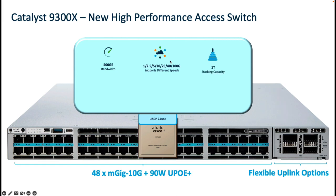The Catalyst 9300X also provides the industry's highest stack bandwidth at one terabit capacity. For the very first time in the switching world, we are introducing 100G of IPSec-based encryption at the ASIC level itself, leveraging our new UADP 2.0 Sec ASIC which comes equipped with a built-in crypto engine capable of 100G of encryption and decryption at the ASIC level.